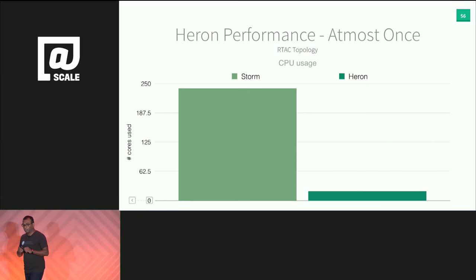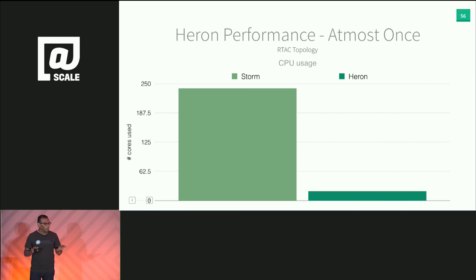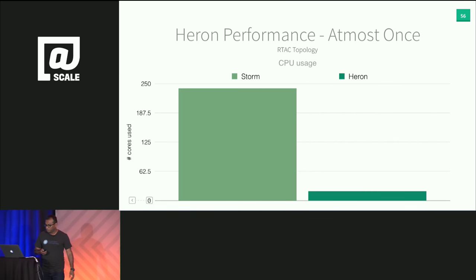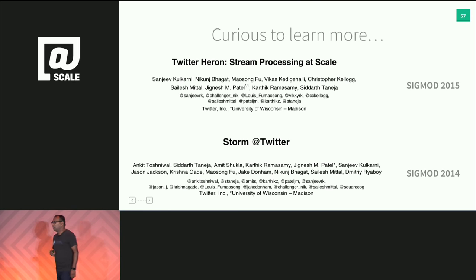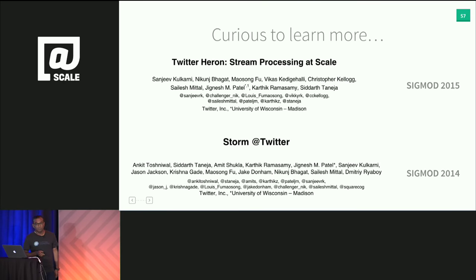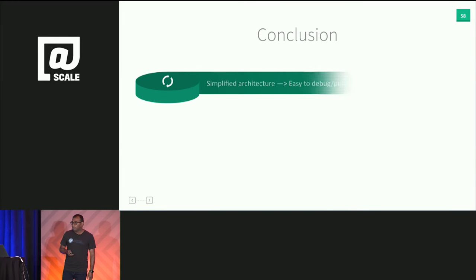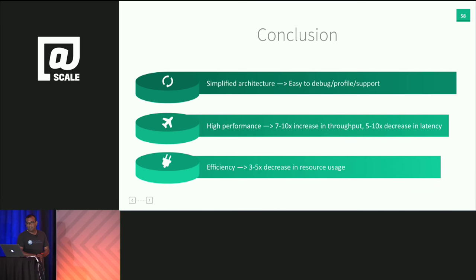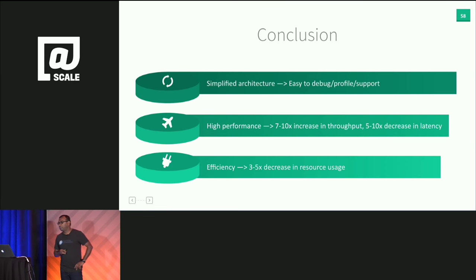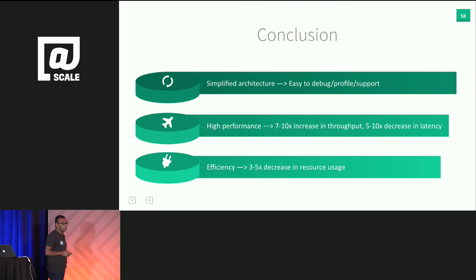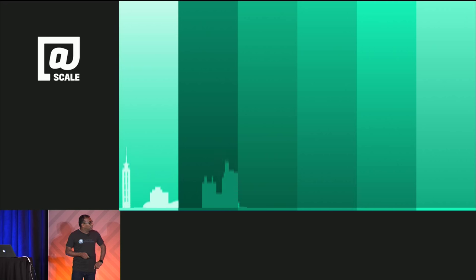In conclusion, in systems design, a simplified architecture goes a long way in terms of performance, debuggability, and support. We published a Heron paper at SIGMOD 2015 and a Storm paper at SIGMOD 2014. Heron consistently delivers 7 to 10x increase in throughput, 5 to 10x decrease in latency, and 3 to 5x decrease in resource usage compared to Storm. Thanks for listening.